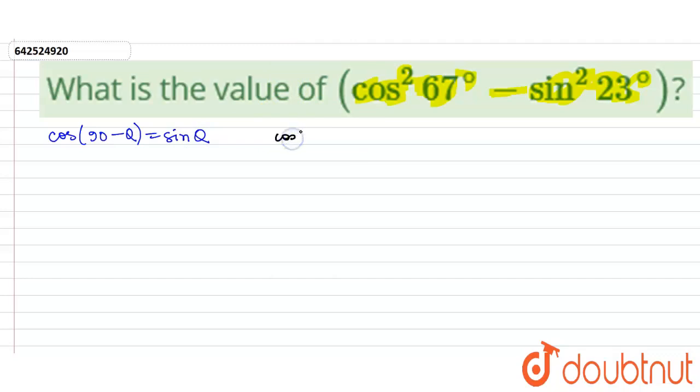So cos 67° can be written as cos(90° - 23°) because 90 minus 23 equals 67. And cos(90° - 23°) is simply sin 23° as per our identity.